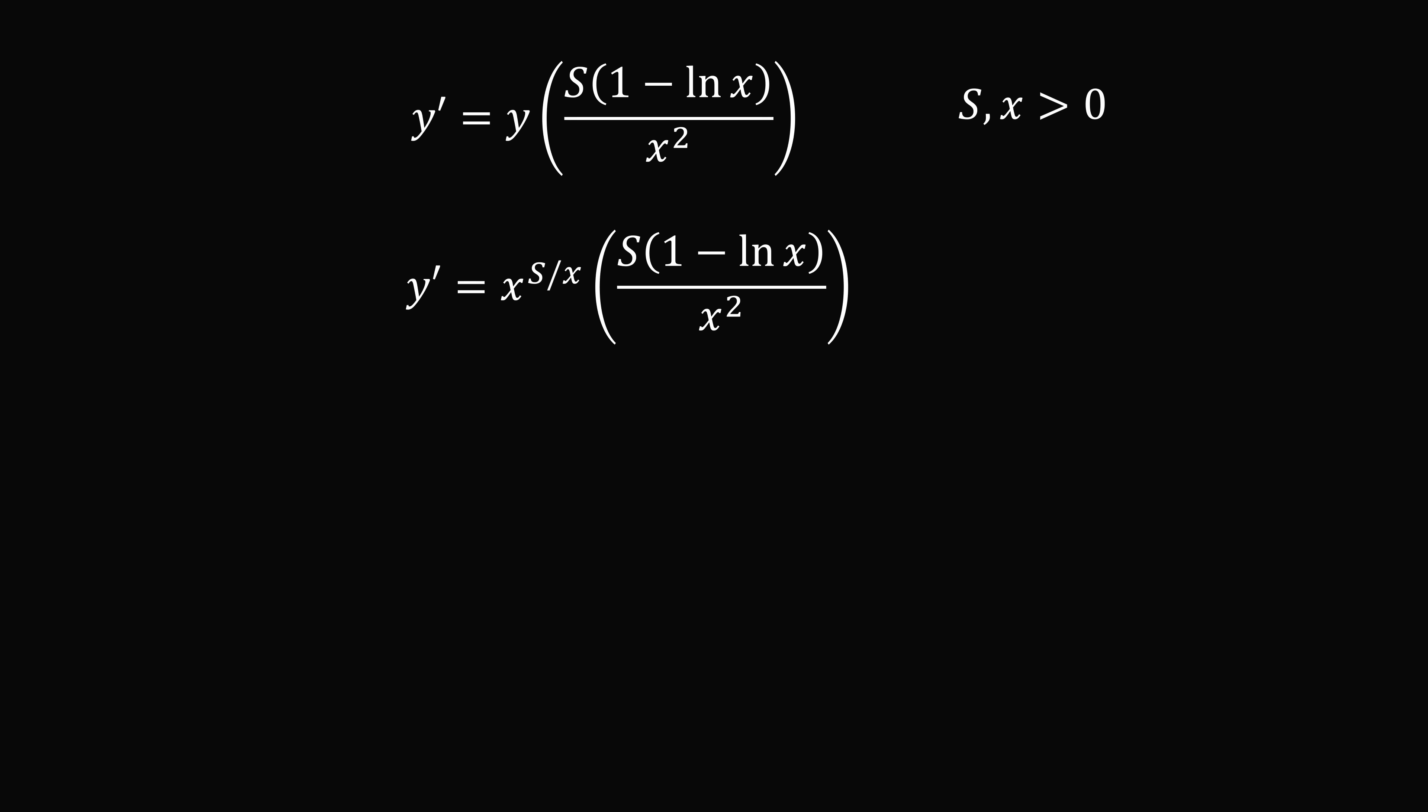So now let's analyze the derivative. We know that s and x are greater than zero. So x to the power of s over x will be greater than zero. And, of course, 1 over x squared is greater than zero. So the only thing that might affect the sign of the derivative is the term 1 minus the natural log of x. So we analyze this. This will be positive when x is less than e. It will be zero when x equals e. And it will be negative when x is greater than e. So we have a maximum when x equals e, which is approximately equal to 2.718.